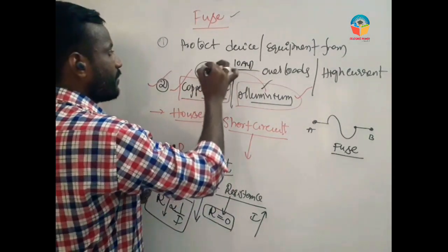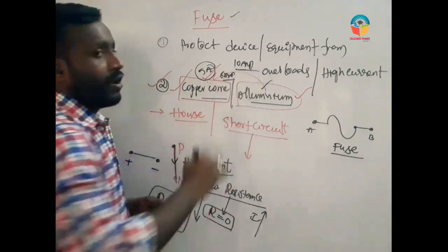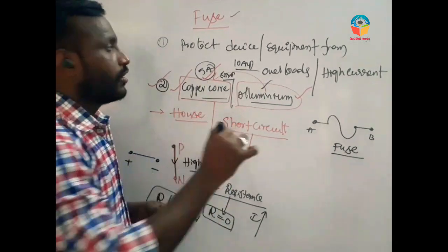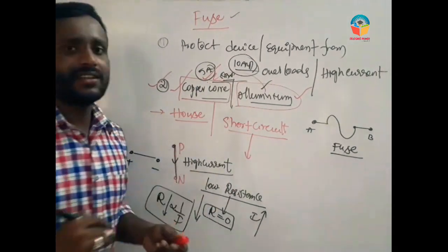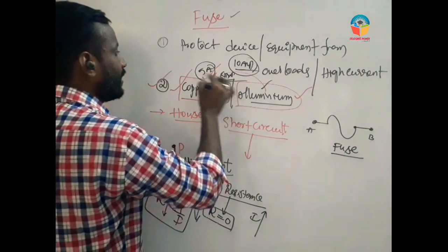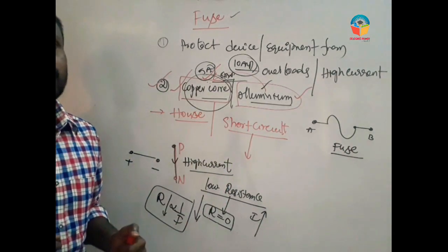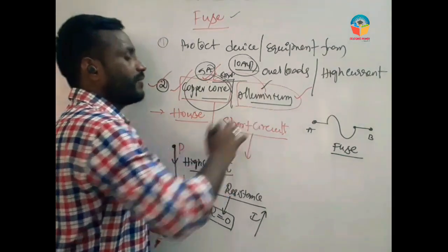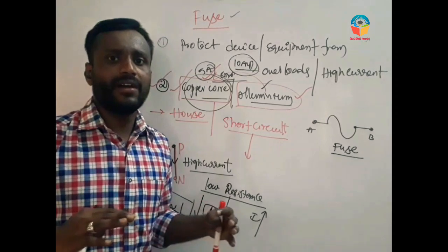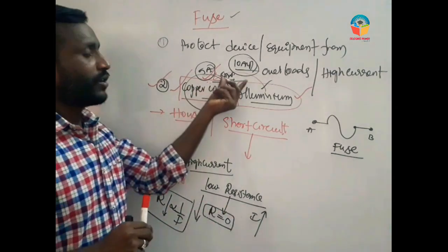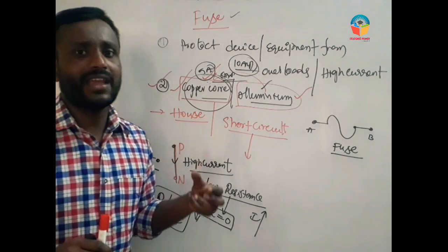For example, if you have a 5A fuse and the current increases to 8A, the fuse will burn. If the fuse is rated 5A and a current of 8A passes through it, the fuse will burn. Depending on the situation or application, different fuse ratings are used.